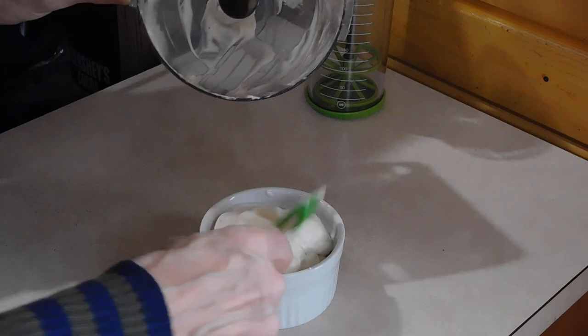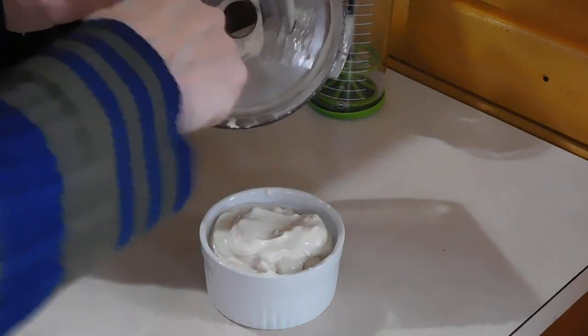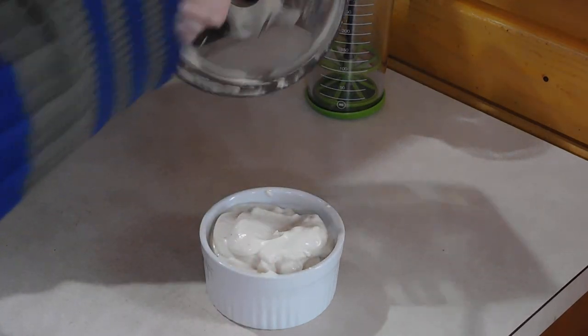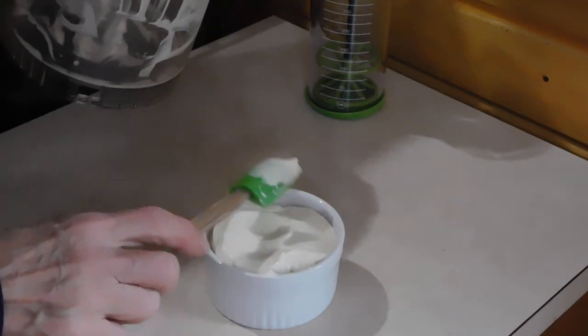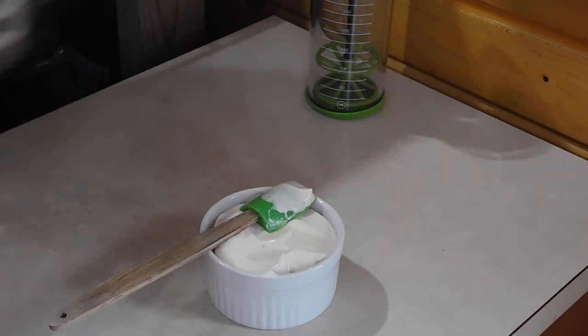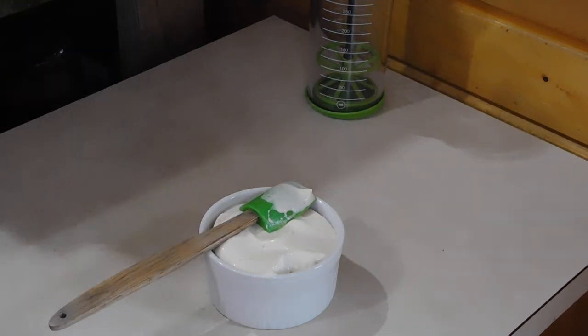One of these little silicone spatulas is very handy for getting everything out of the food processor. And you can find plenty of these recipes online. I used a recipe from Fuss Free Vegan. I've made it once before. It is so delicious. And you can keep it in the refrigerator for like two weeks.